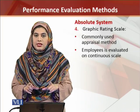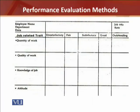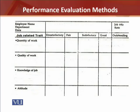Now let's check this in a demonstration. This is a grid showing job-related traits such as quantity of work, quality of work, knowledge of job, and attitude. On top, the scale reads: unsatisfactory, fair, satisfactory, good, and outstanding. For example, a rating of 'unsatisfactory' on quantity of work means the employee's performance is below satisfactory. In this way, an employee may be rated 'fair' on quantity, 'unsatisfactory' on quality, 'satisfactory' on job knowledge, and 'good' on attitude — all captured in the appraisal form through this graphic rating scale.